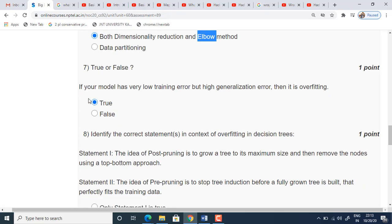True or false question, seventh one. If your model has very low training error but high generalization error, then it is overfitting. It's true. Overfitting means the performance will be good, I mean the model performance will be very good. But when it generalizes to new data, then the error rate will be more. That is called overfitting. So the answer is true.